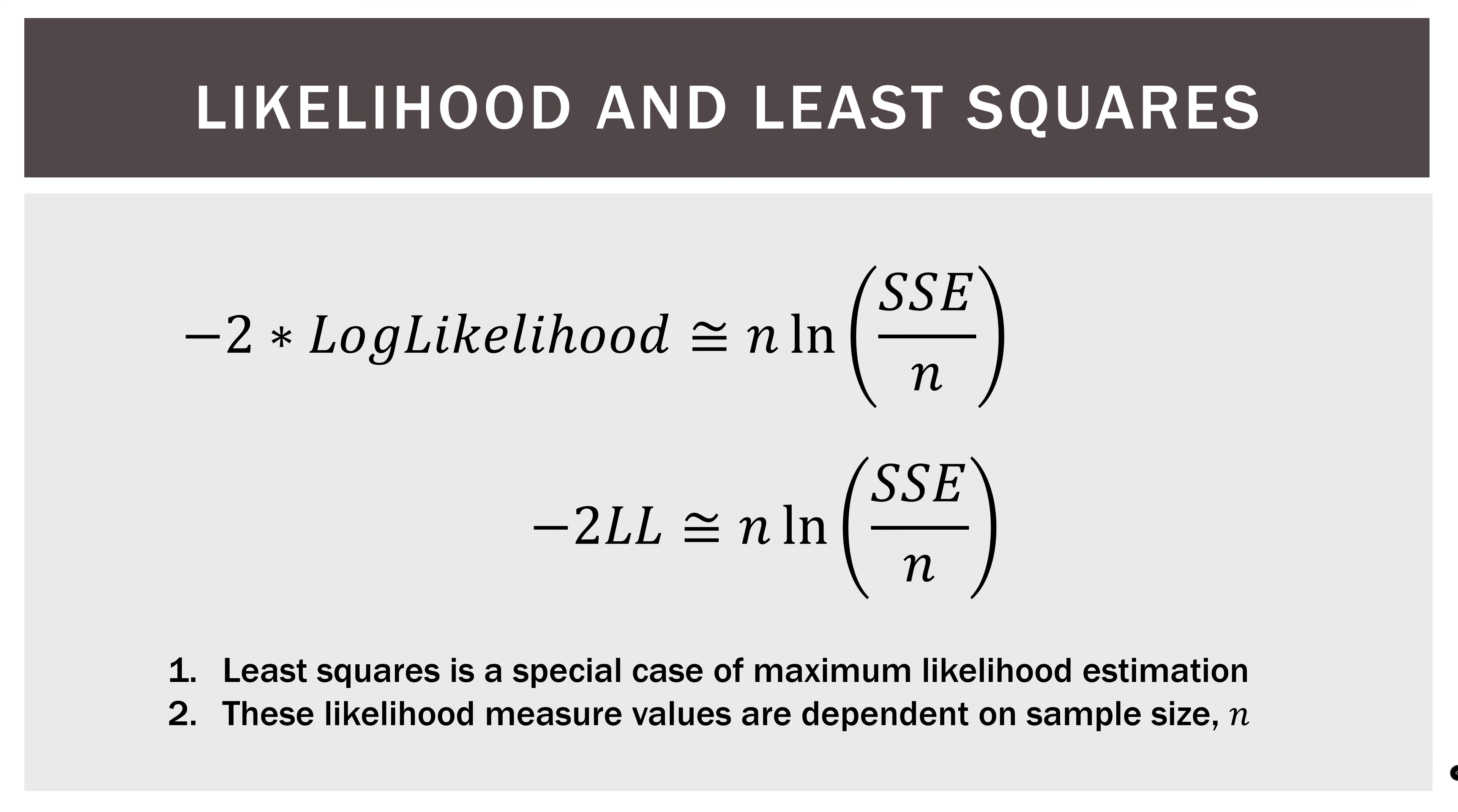So two things to keep in mind. Least squares is a special case of maximum likelihood estimation. Again, I'm not going to go into all that in this video. Again, go ahead and check out the other video I mentioned. And number two, these likelihood measure values are dependent on sample size, which is N. So I said at the beginning that the AIC and the BIC scores aren't all that intuitive. And that's because they are based largely on the sample size that you're dealing with. So you just have to keep that in mind. Whereas Mallows is much easier to grasp intuitively because it's based on the number of parameters in the model in terms of our interpretation. So just keep that in mind. But again, lower is better. Lowest is the best.